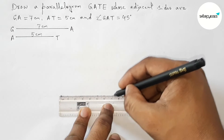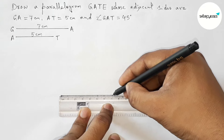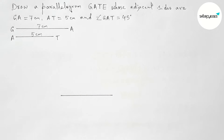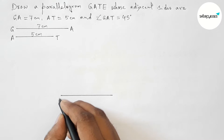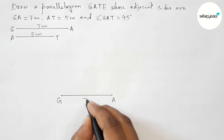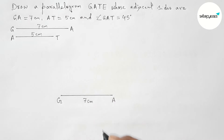Next, drawing a line segment of length 7 centimeter with the help of a scale. Now labeling here — taking point G here and point A here. This is the 7 centimeter line segment. Next, drawing a 45 degree angle on point A with the help of a compass.